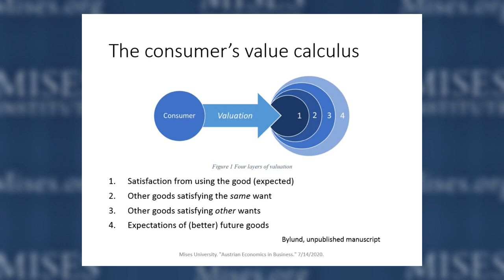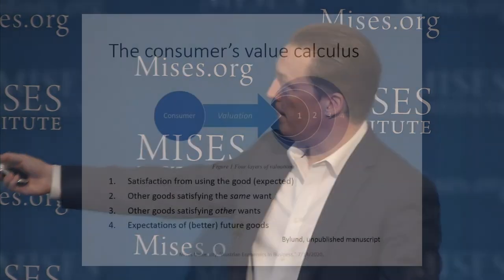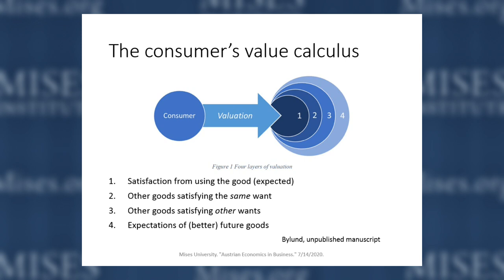What this means for the consumer in the market is actually a pretty complex picture. The consumer values a good for its ability to satisfy a want — that's the core. Imagine you're an entrepreneur producing a widget: first, you need to actually satisfy a want for the consumer. But that's not really how a consumer makes a decision, because they're not buying anything that could potentially be useful to them. You also have to be better — offer more value than other goods that satisfy the same want. That's your immediate competition.